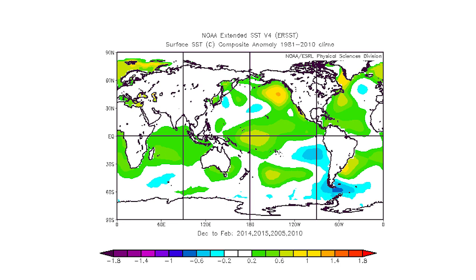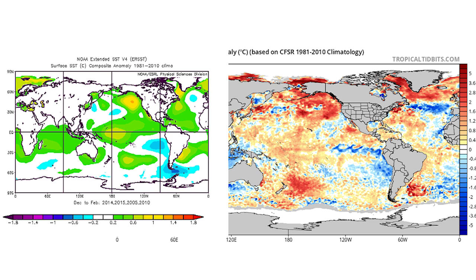I wouldn't call 2009-2010 the strongest analog — 2004 to 2005 looks the most similar. Here's the combination of all of them, and you can see once combined it looks a lot like this year. The area south of Alaska and west of California looks very similar, the ENSO shows a neutral-to-La Niña look near Ecuador with warmer water in the middle of the ocean, and in the Atlantic there are slightly above-average temperatures and Greenland blocking — all very similar.